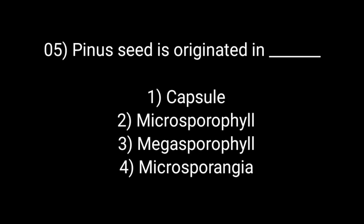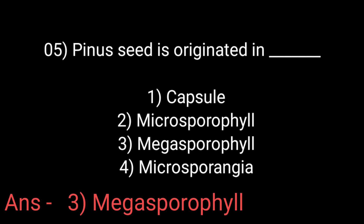Pinus seed is originated in: Option 1 Capsule, Option 2 Microsporophyll, Option 3 Megasporophyll, Option 4 Microsporangia. The answer is Option 3 Megasporophyll. Also, we remember that the roots of Pinus have fungal association to form mycorrhiza, and in Pinus the stems are branched.